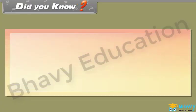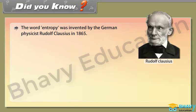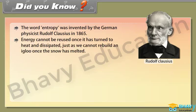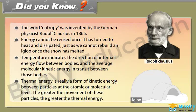Did you know? The word entropy was invented by the German physicist Rudolf Clausius in 1865. Energy cannot be reused once it has turned to heat and dissipated, just as we cannot rebuild an igloo once the snow has melted. Temperature indicates the direction of internal energy flow between bodies and the average molecular kinetic energy in transit between those bodies. Thermal energy is really a form of kinetic energy between particles at the atomic or molecular level; the greater the movement of these particles, the greater the thermal energy.